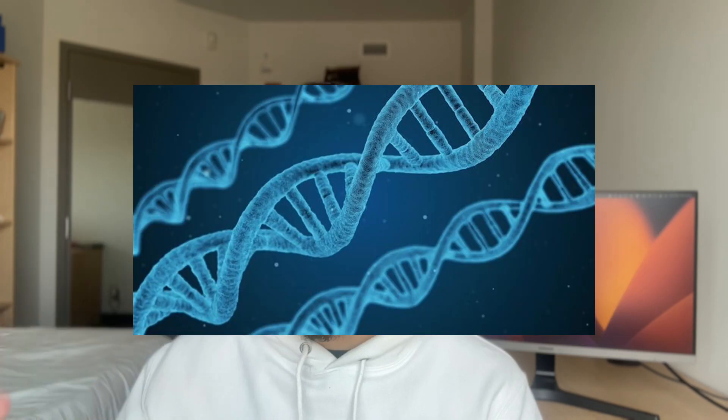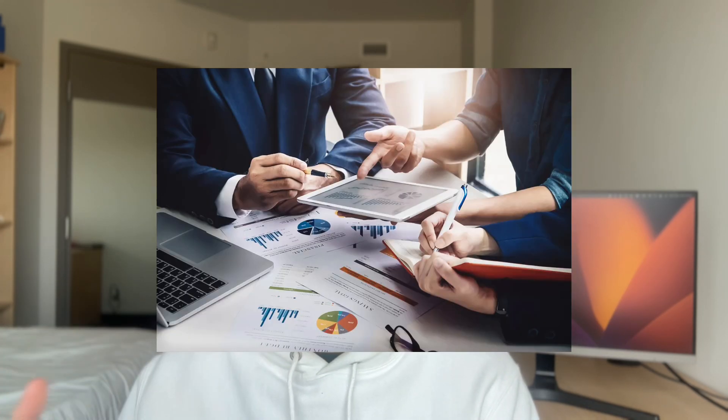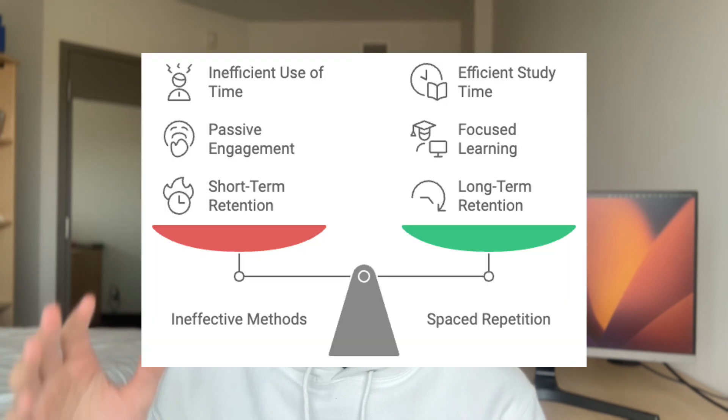Most subjects that people take at GCSEs and A-levels will include memorization — Physics, Chemistry, Biology, English Lit, English Lang, Business. I could keep going. They all require memorization. But to understand memorization, we need to understand two specific concepts: Active Recall and Spaced Repetition.